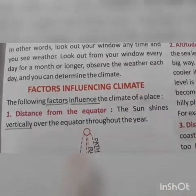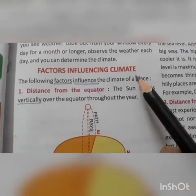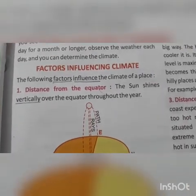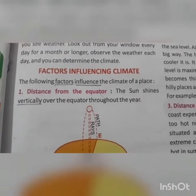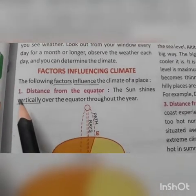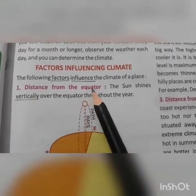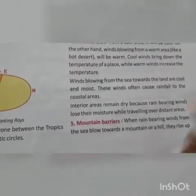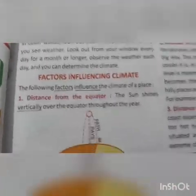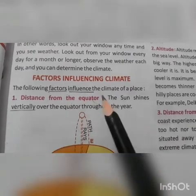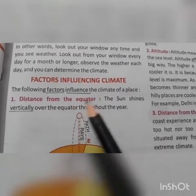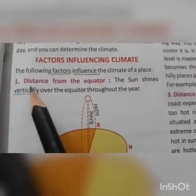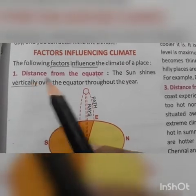Now let's move to another topic: factors influencing climate. There are many factors which influence the climate of a place. The very first factor is distance from the equator. Then we will read altitude, distance from the sea, direction of the winds, and mountain barriers. All these things are included in influencing the climate of a place. Let's start with the first factor: distance from the equator.